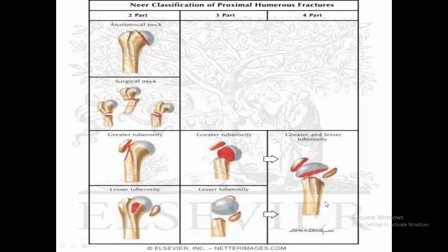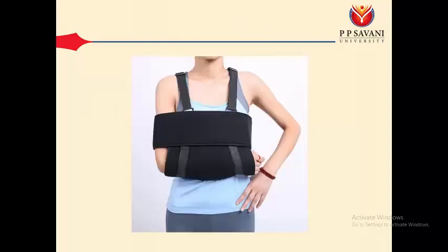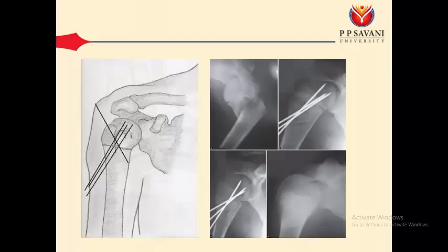For treatment: when displacement is not present, immobilization with a triangular sling is enough. If the fracture is non-displaced, a triangular sling will give good results. If the fracture is displaced, various options are available. One option is percutaneous K-wire fixation — the K-wires are inserted through the skin under image intensifier X-ray guidance, followed by immobilization for three to four weeks.